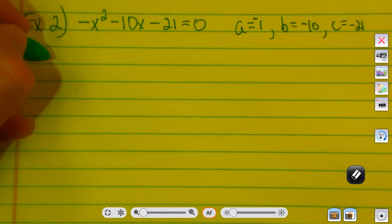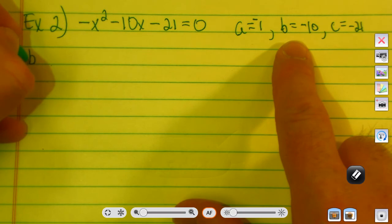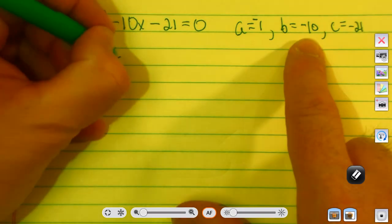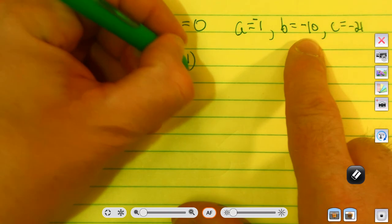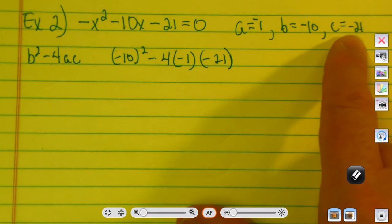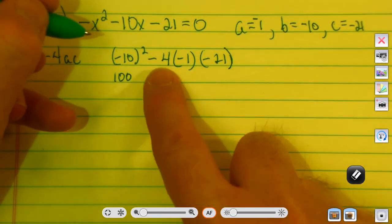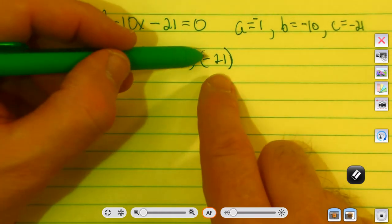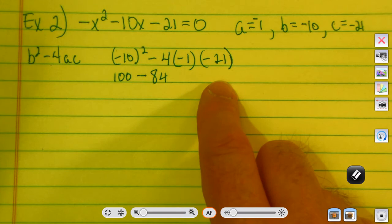First thing I want to do is use the discriminant. So, it is b squared. Remember, the discriminant is b squared minus 4ac. So, there will be a negative 10 squared minus 4 times a negative 1 times a negative 21. 10 squared, 100, negative 4 times a negative 1 is positive 4. 4 times a negative 21 will be a negative 84, I think.